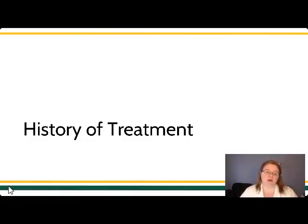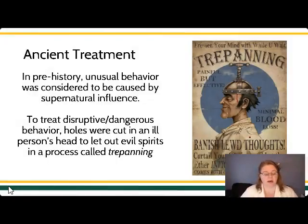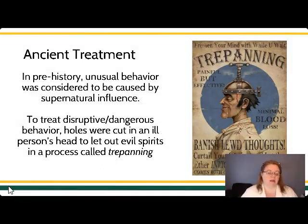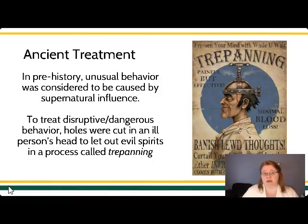We know from looking at archaeological findings that some early tribes, some pre-historical groups, tended to view abnormal behavior — behavior that's dangerous or unusual — as caused by supernatural influences. These could range from everything like demonic possession to intervening by a deity or a god. In favorable ways, this could be viewed as an actual intervention by your god.